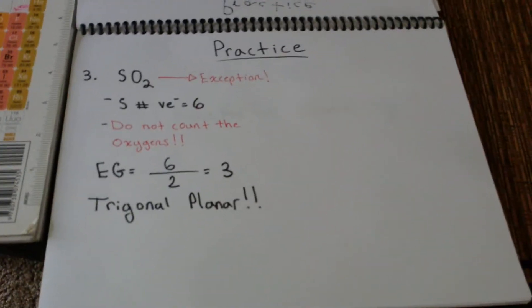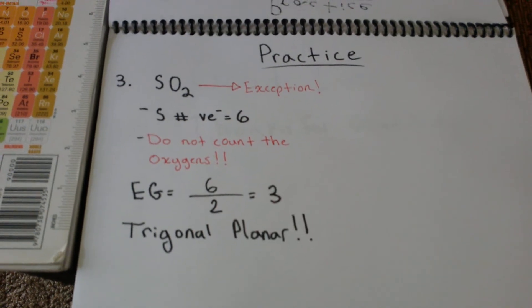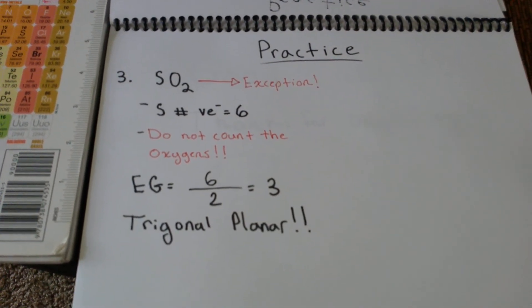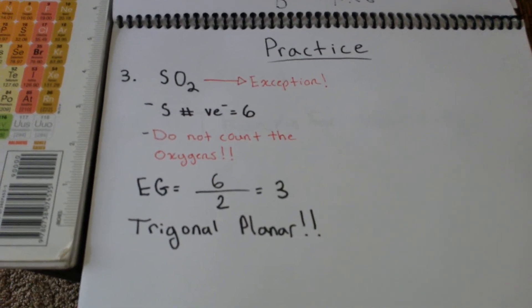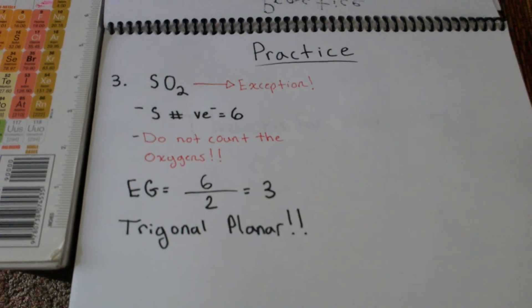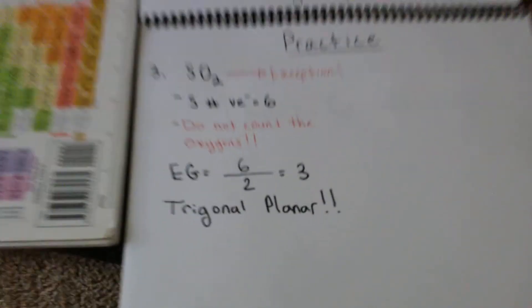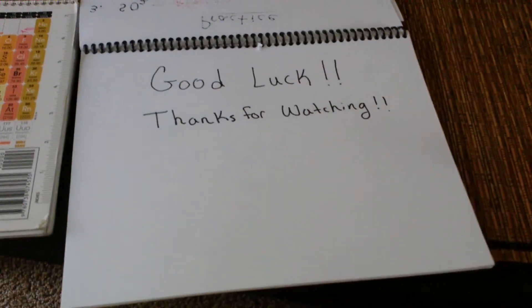So now the last example will be with our exception for oxygen. So there's SO2. We know sulfur is our central atom that has six valence electrons. And then as I showed you guys for the exception, you do not count the oxygens. So it'll just be six divided by two equals three, and that's trigonal planar. So thanks for watching and good luck.